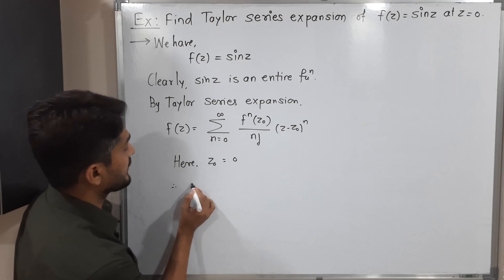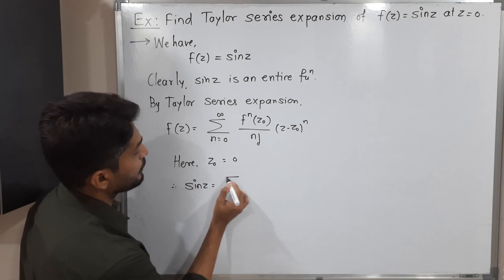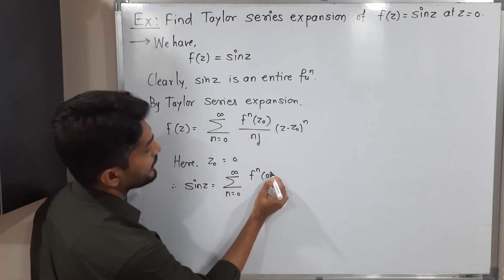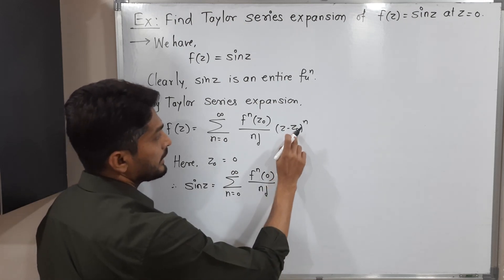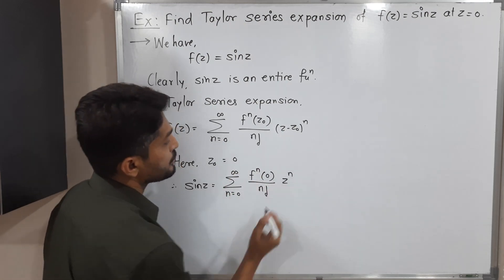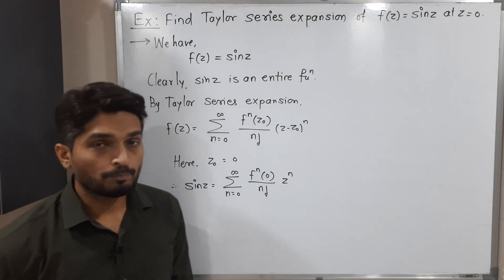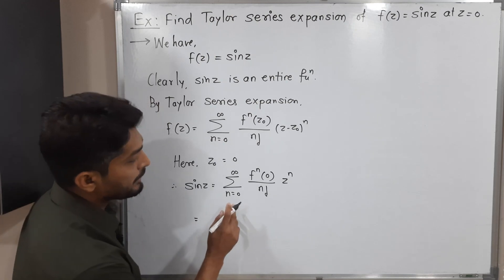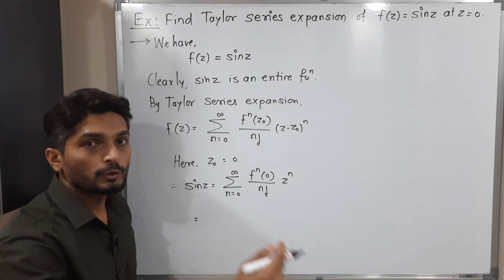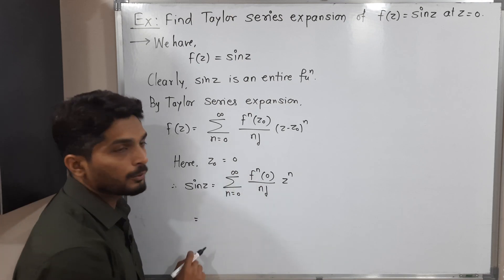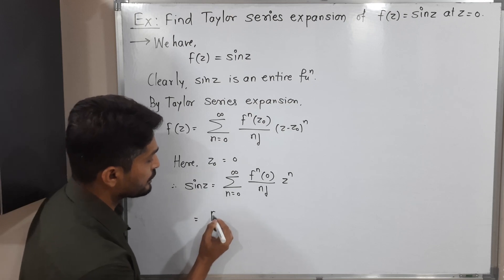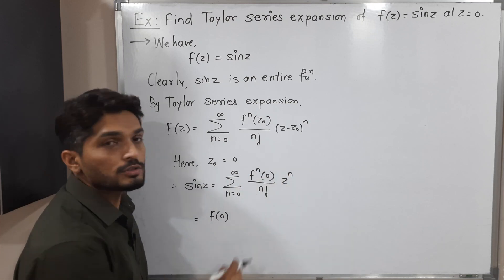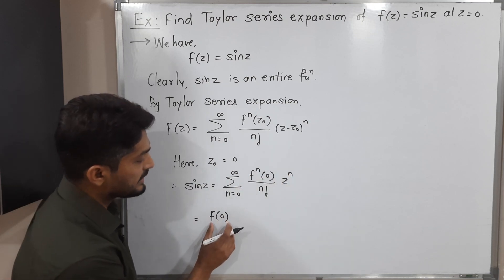So therefore f(z), which is sin(z), equals the summation n running from 0 to infinity of the nth derivative of f at point z0=0, upon n factorial, times z raised to n. Let us expand it to get a clear picture of the series. Putting n=0: we get the zeroth derivative, meaning the original function f(0), divided by 0 factorial (which is 1), times z to the 0 (also 1). So that term is simply f(0).